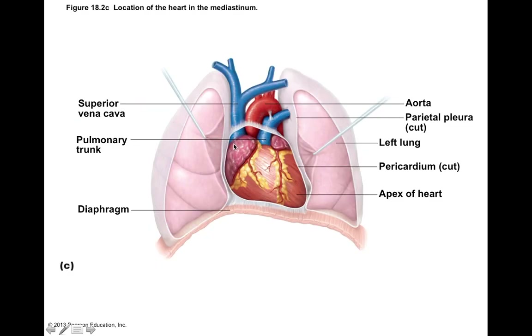You can see this pretty well in this picture — there's a whitish tissue that surrounds the heart. They've actually cut away some of the pericardium so you can see the heart itself, and we'll talk more about the pericardium here pretty soon.